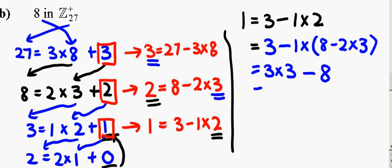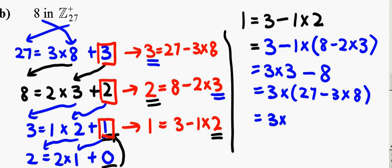3 is equals to 27 minus 3 times 8. So, hence, there's a total of 3 times 27 minus 9. Okay, I forgot to bring the minus 8 down. So, total of minus 10 times 8.